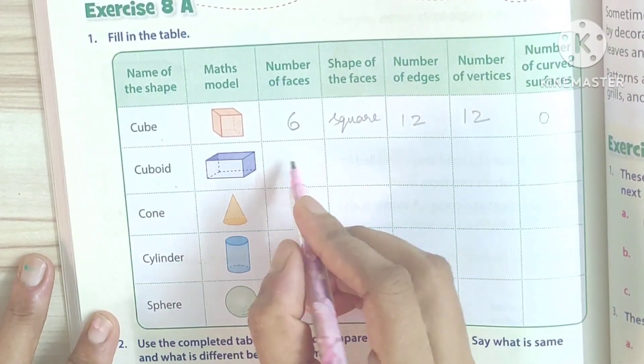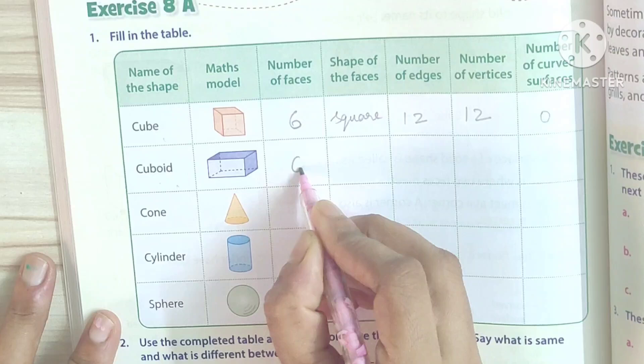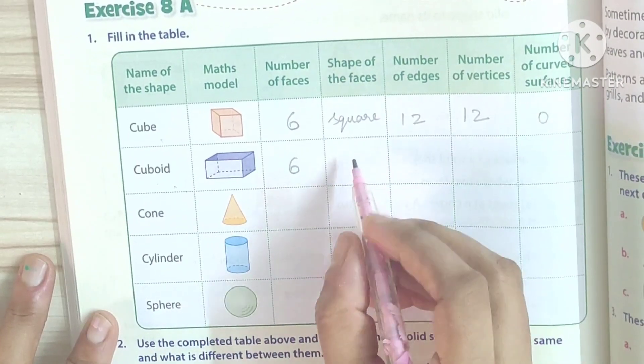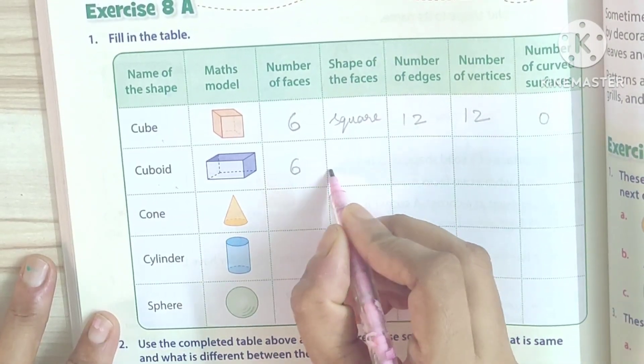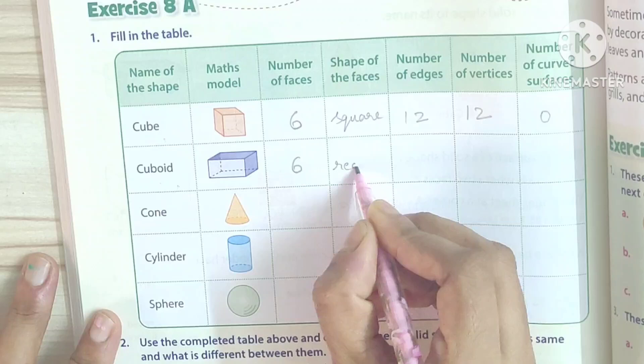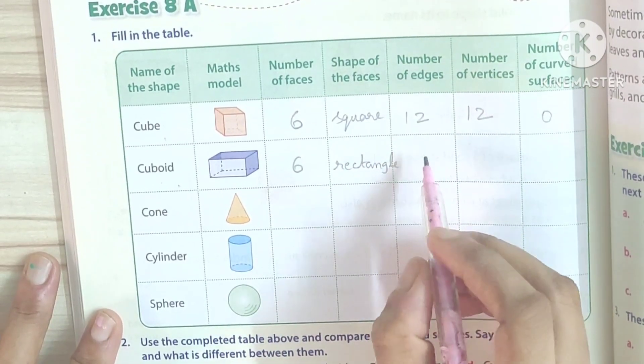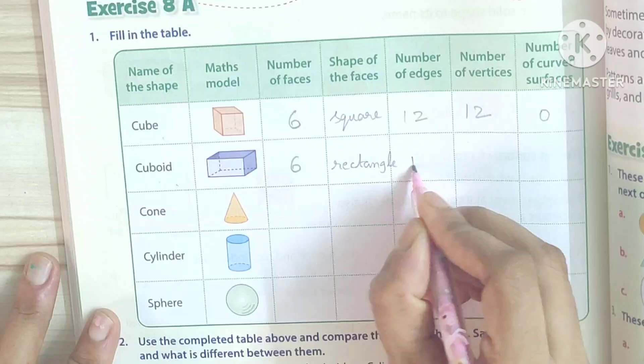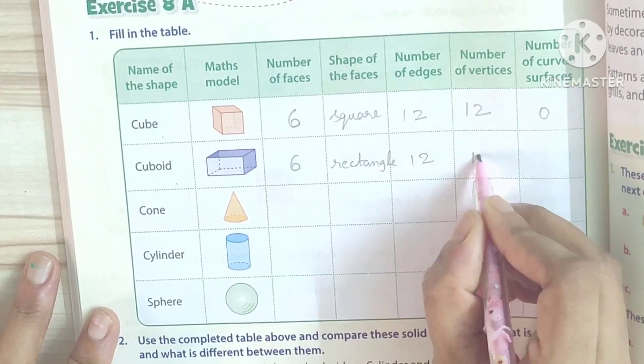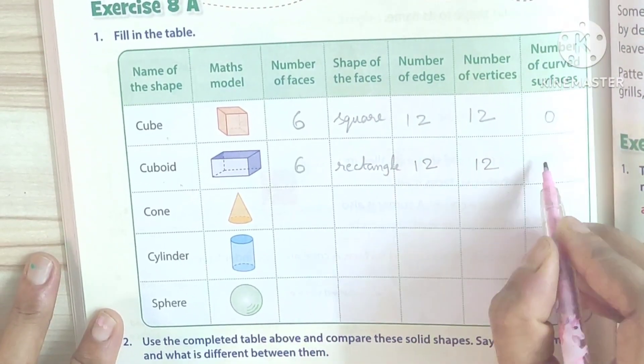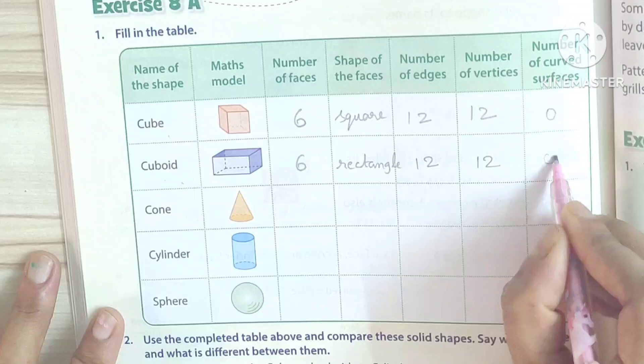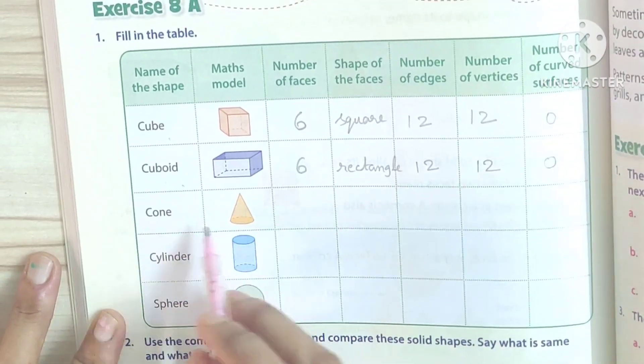Cuboid. 6. Shape of face: Rectangle. Number of edges: 12. Number of vertices: 12. Number of curved surface: 0.